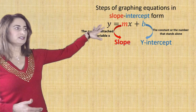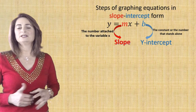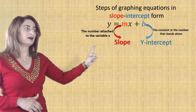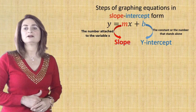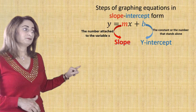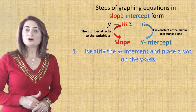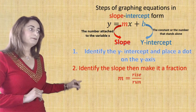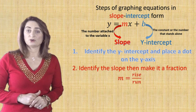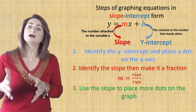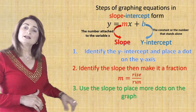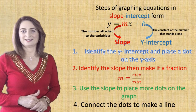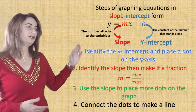Today's lesson is to graph linear equations in slope-intercept form. The four steps are: step one, identify the y-intercept and place a dot on the y-axis; step two, identify the slope and write it as a fraction; step three, use the slope to draw other dots on the graph; step four, connect those dots to make a line.